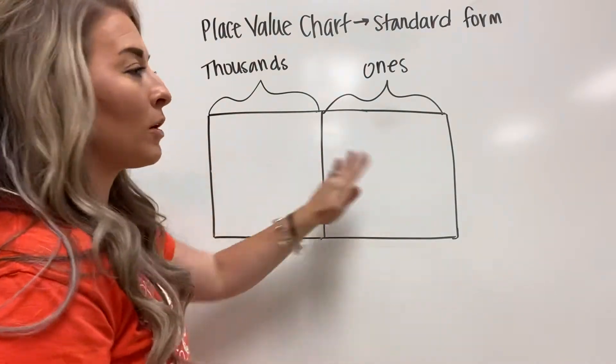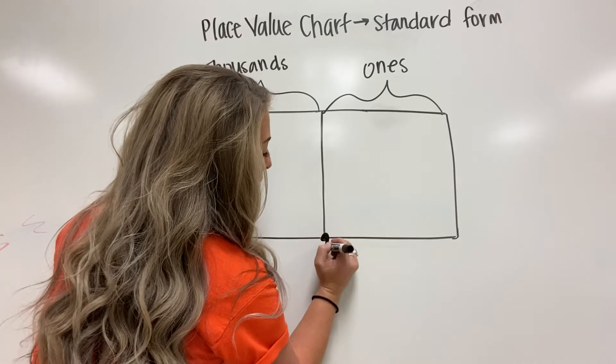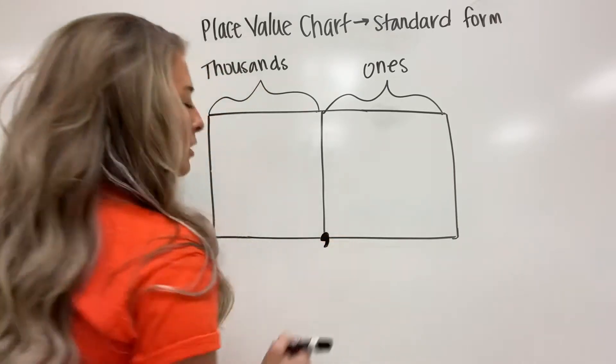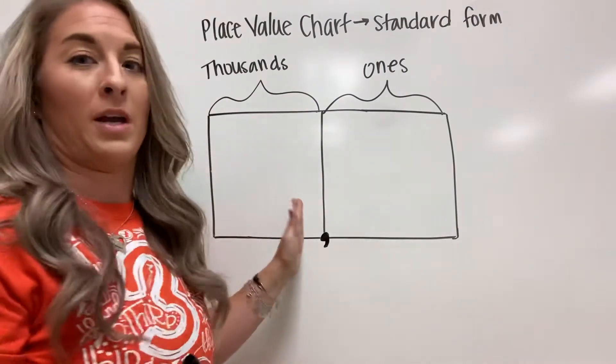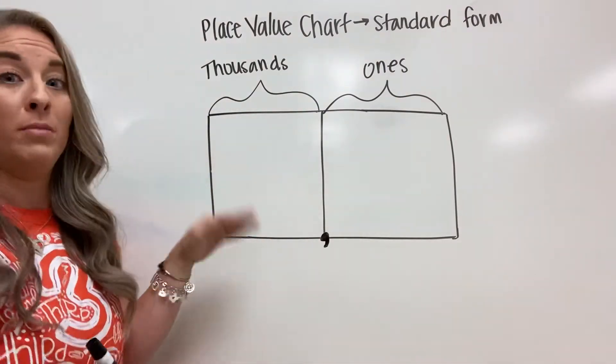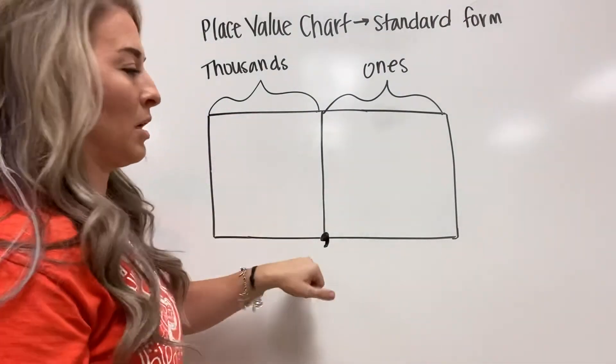What separates our two periods is called a comma. You had the comma a little bit last year, but this year you're going to have it a lot more, and next year you're going to add another comma to the front which is your millions comma, but this year we'll just have the thousands comma.